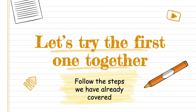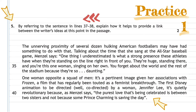We're going to do a couple of practice questions from previous past papers. We're going to try this one together first. If you're feeling confident, please feel free to pause the video and try the question yourself. If you're still not very confident, please do not worry — we're going to do practice one together. Question five says: 'by referring to the sentence in lines 37 to 38, explain how it helps to provide a link between the writer's ideas at this point in the passage.' It is two marks. We need to identify lines 37 to 38 and highlight them in the passage.